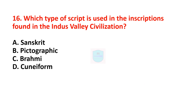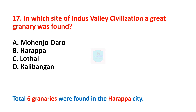Next question: which type of script was used in the inscriptions found in the Indus Valley Civilization? Correct answer is pictographic script. Pictographic script was used in the inscriptions. Next question: in which site of the Indus Valley Civilization was a great granary found? Correct answer is Harappa. In the Harappan site a great granary was found. In total, six granaries were found in the Harappan city.